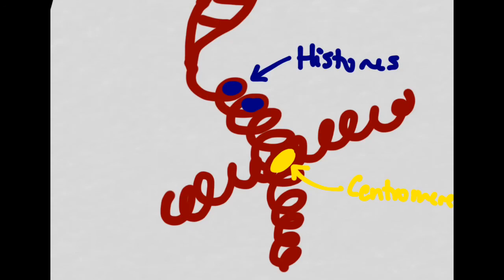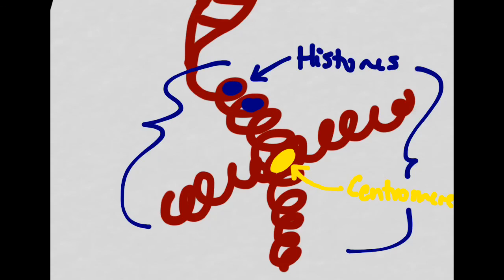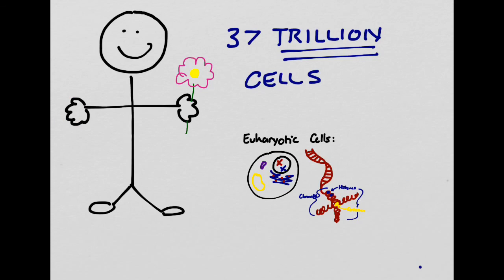The chromosome is pinched together in the center by a structure called the centromere. Each side of this letter X is actually called a chromatid. Just about all plants and animals have this type of cell.